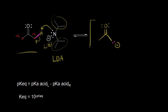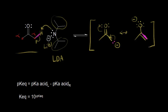We could draw a resonance structure. We could show these electrons in magenta moving in here, and these electrons coming off onto our oxygen. For our resonance structure, we would show the negative charge is now on our oxygen — a negative one formal charge. The electrons in magenta moved into here to form our double bond, and then the electrons in blue move out onto the oxygen. This is our enolate anion.